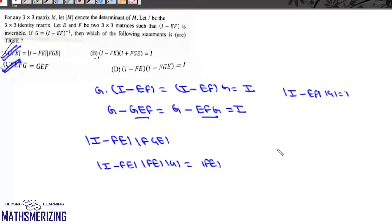If we multiply it, we can write I minus FE plus FGE and then minus FE into FGE. We know that we can write EFG as G minus I, so we write EFG as G minus I.